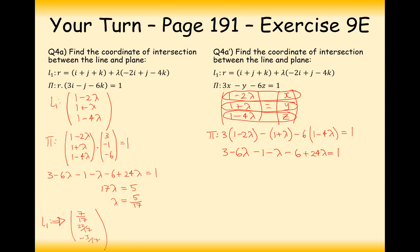So that's how we do these types of questions: intersecting a line through a plane is just substituting the equation of the line into the equation of the plane, working out what lambda needs to equal, and then once you've got lambda, substituting that back into the equation of the line to get the exact coordinate of your intersection point. We've finished the videos for exercise 9E, so do have a go through exercise 9E before we move on to the monster exercise that is 9F — there are about seven or eight videos there. Thanks very much for watching.